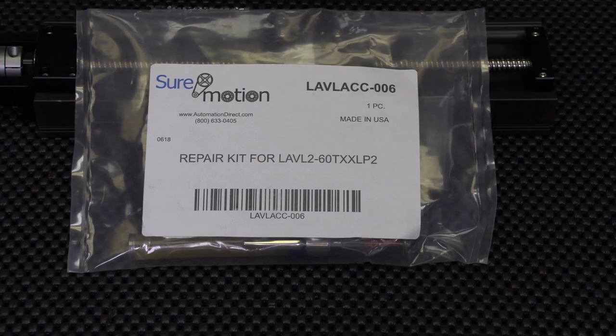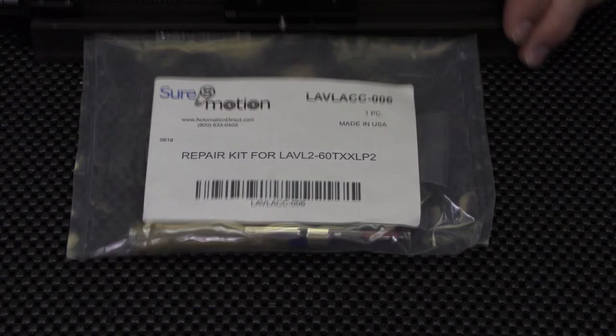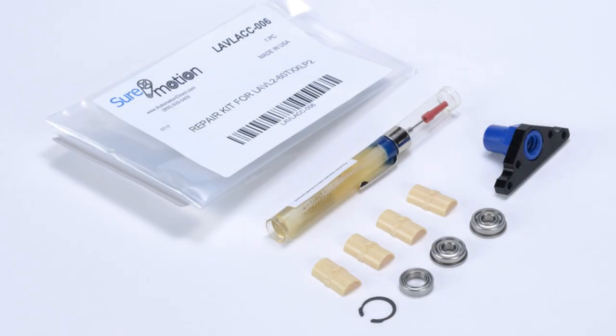Let's begin. I am using the rebuild kit part number LA-VLACC-006. This kit comes with 3 bearings, 1 retaining ring, 4 slide liners, 1 lead screw nut and mount sub-assembly, and 1 lubrication pen applicator.